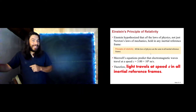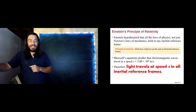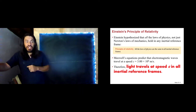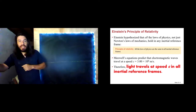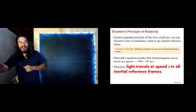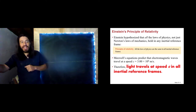Electric and magnetic theory of the 1800s predicted that light should travel at 3×10⁸ meters per second. Einstein proposed that light travels at that speed in all inertial reference frames.